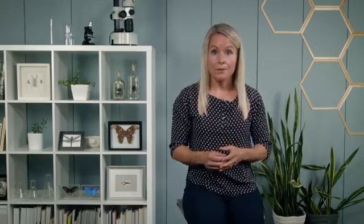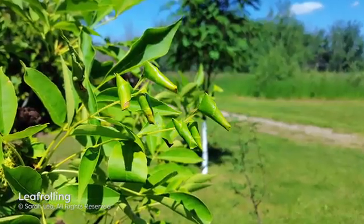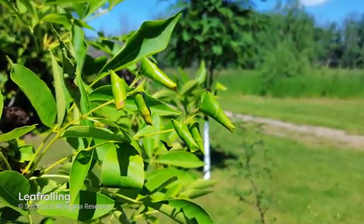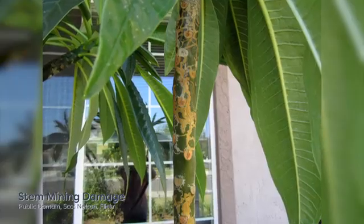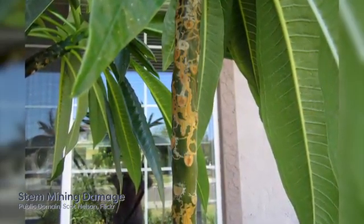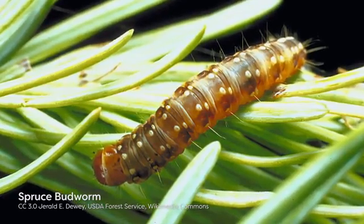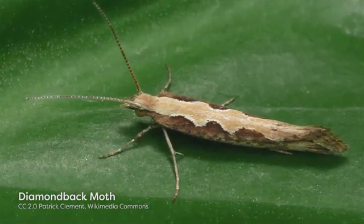Leaf miners tend to consume less plant biomass than other herbivores, as they are restricted to feeding only on tissues between the two epidermal layers of leaves. This limitation means that species that exclusively mine throughout larval development tend to be small. Some insects only mine leaves as young larvae before switching to defoliation or leaf rolling in later instars, while others will mine different tissues like stems, roots, or flowers when they get older. The spruce budworm and diamondback moth are good examples of insects that mine leaf tissue as young larvae but feed as defoliators in late larval development.